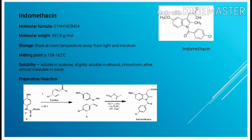Having finished the introduction, classification, and definition of NSAIDs, let us look at one compound in more detail. The example is indomethacin. Its molecular formula is C19 H16 Cl NO4, and its molecular weight is 357.8 grams per mole. It is usually stored at room temperature, away from light and moisture. Its melting point is 158 to 162 degrees centigrade. It is soluble in acetone and slightly soluble in ethanol, chloroform, and ether, and almost insoluble in water.